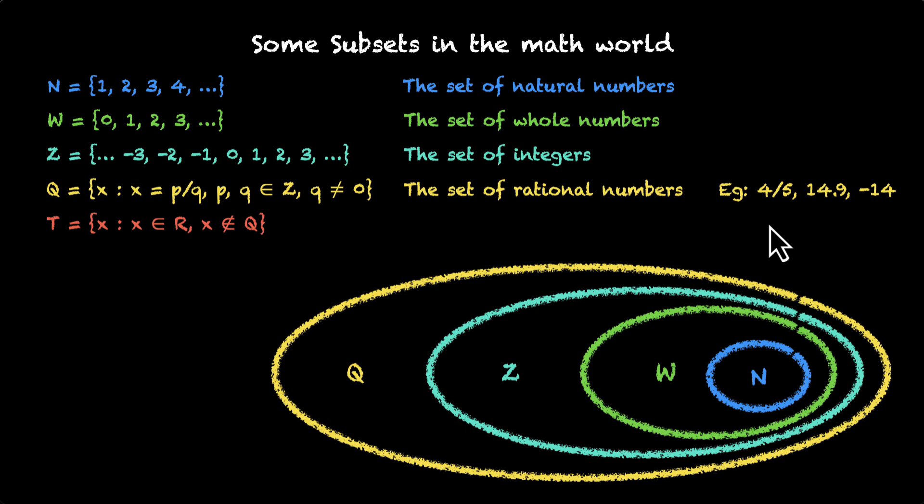We have another set T, which is also in set builder form. This is all the x such that x belongs to r. And if you recall from the first video of this chapter, r is a set of real numbers. x belongs to real numbers, where x does not belong to q. So we're breaking a pattern here. For this set, we're saying that all the elements do not belong to the previous set.